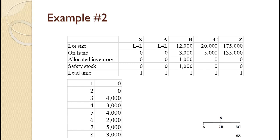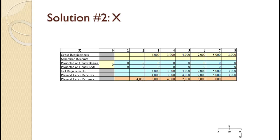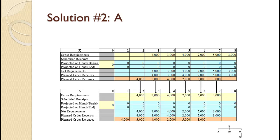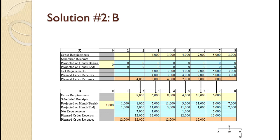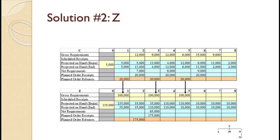Since you have seen an example already, pause the video and try to work this problem on your own. Once you are done, you can use the video to check your work and spot any mistakes. The screen shows the completed MRP planning grid for X. Each X requires one A — the screen shows how the planning grid for X flows into A, along with the completed planning grid for A. Each X requires two Bs and three Cs, with the flows and completed grids shown for each. Each C requires five Zs, and the screen shows the planning grid for C flowing into Z, along with the completed planning grid for Z.